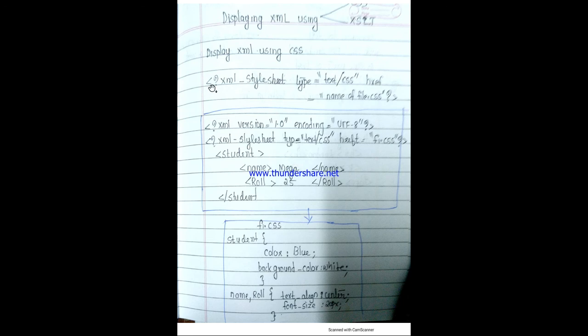If we have a CSS display, we can display the XML file. We can link the XML style sheet by specifying the type as text/css. If you have a CSS style, you can reference the file as filename.css with type text/css.